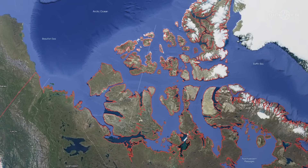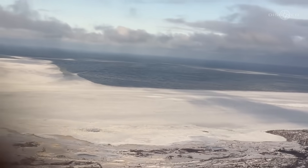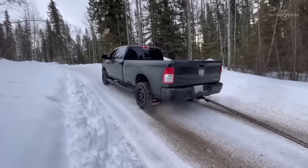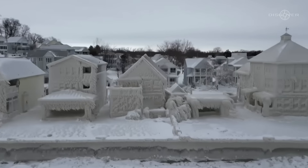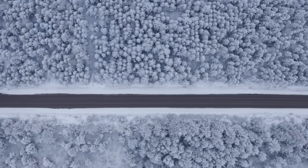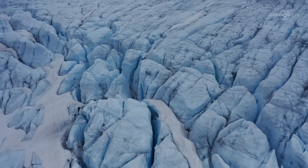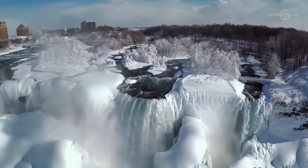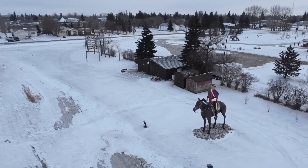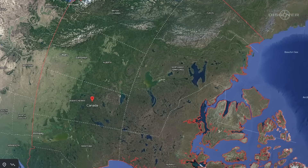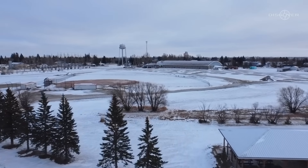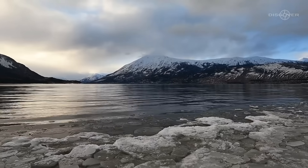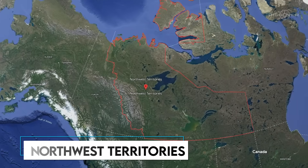Canada's north is a region with a hazy definition. With the exception of the Maritimes, all of the provinces have dry, generally arid, and unpopulated northern regions that are vulnerable to long, chilly winters, significant snowfall, and permanently frozen soil. In a more precise sense, the north typically refers to the vast northwest portion of Canada, which is home to the three northernmost territories of the country: Yukon, Nunavut, and the Northwest Territories.